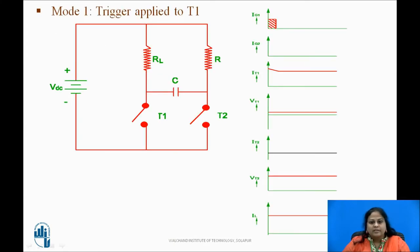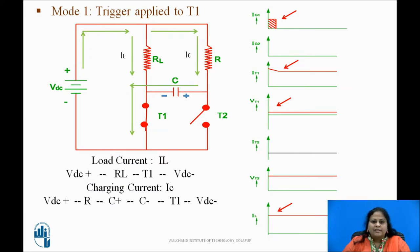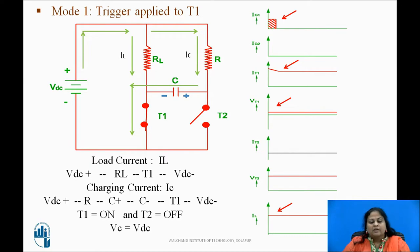Next is mode 1. In this state, T1 is triggered. As soon as a gate pulse is applied to SCR T1, it turns on and voltage across it falls to its on-state voltage level. Current starts flowing through T1. Two currents flow through this circuit: the load current IL which flows through the path Vdc+ → RL → T1 → Vdc−, and the charging current IC which flows through Vdc+ → R → C+ → C− → T1 → Vdc−. Due to this charging current, the capacitor gets fully charged to supply voltage Vdc. Thus, at the end of mode 1, T1 is on, T2 is off, and Vc is equal to Vdc.